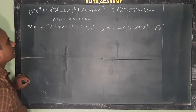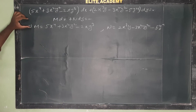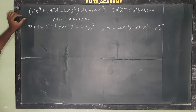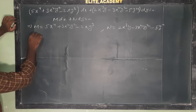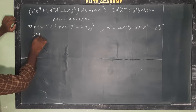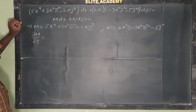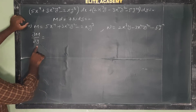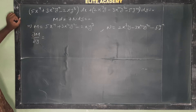We have to check whether it is exact or not. For the exact differential equation, we have to find ∂M/∂y and ∂N/∂x. ∂M/∂y means differentiate M with respect to y partially.